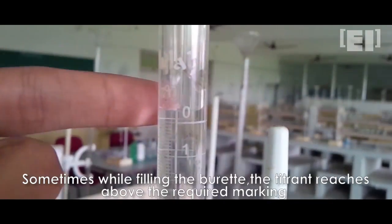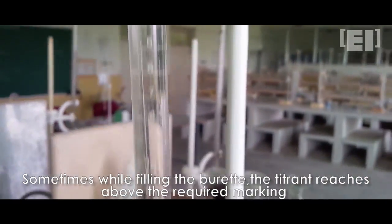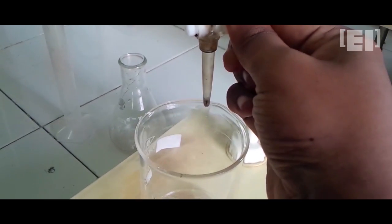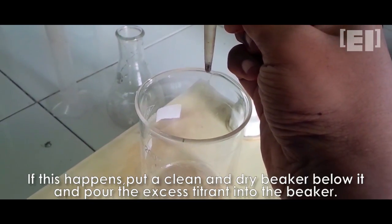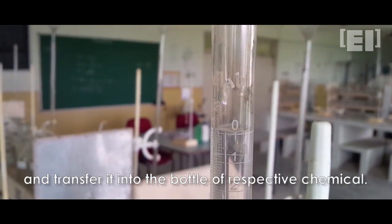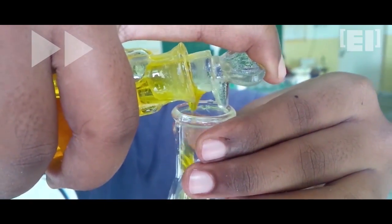Well sometimes what happens is that the liquid goes higher than the zero marking. This is not bad and it can happen very often. That's what happened here too. We'll put the beaker below and take out the excess solution and pour it back into the container. Now pour 2-4 drops into the flask and titrate the solution.